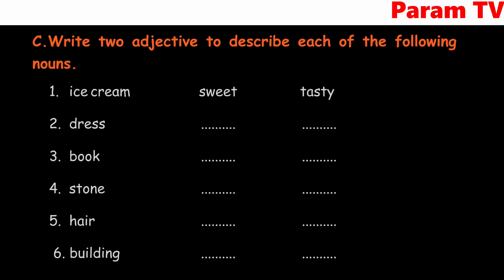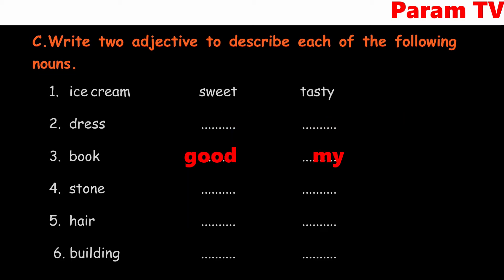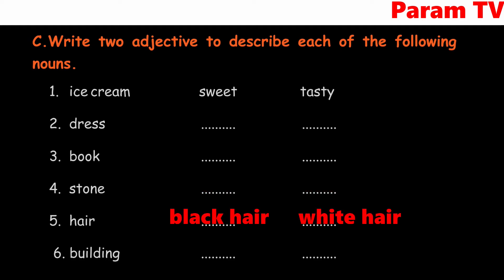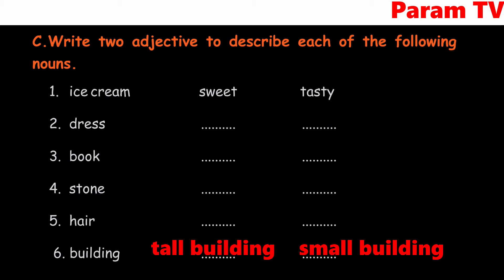Second: dress — what adjectives? Beautiful and comfortable. Third: book — two adjectives could be good. Fourth: stone — big and small. Fifth: hair — black hair, white hair. Sixth: building — tall building, small building.